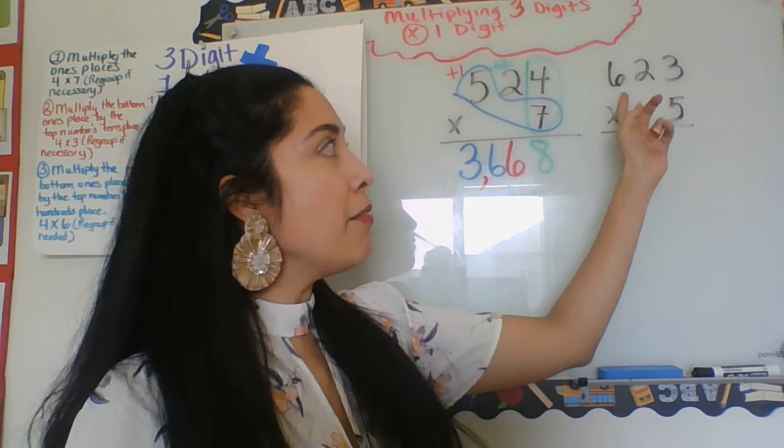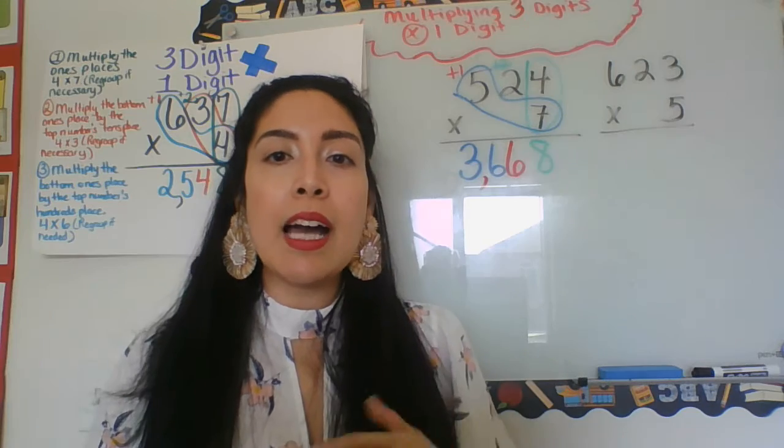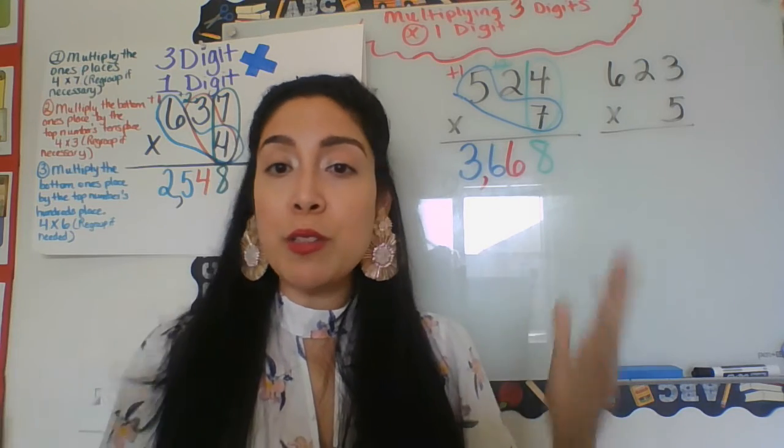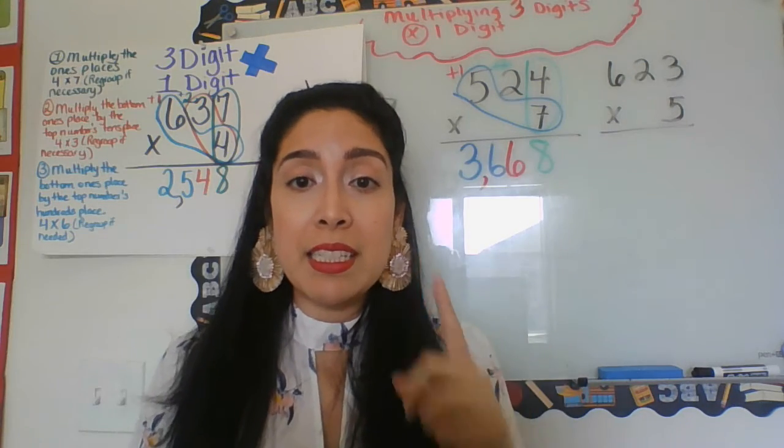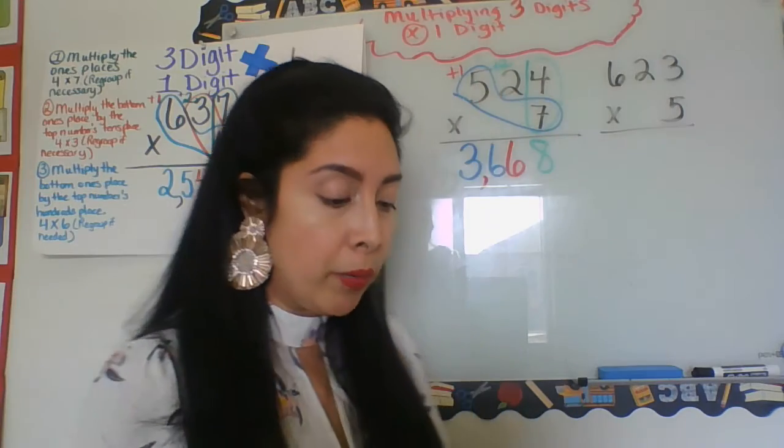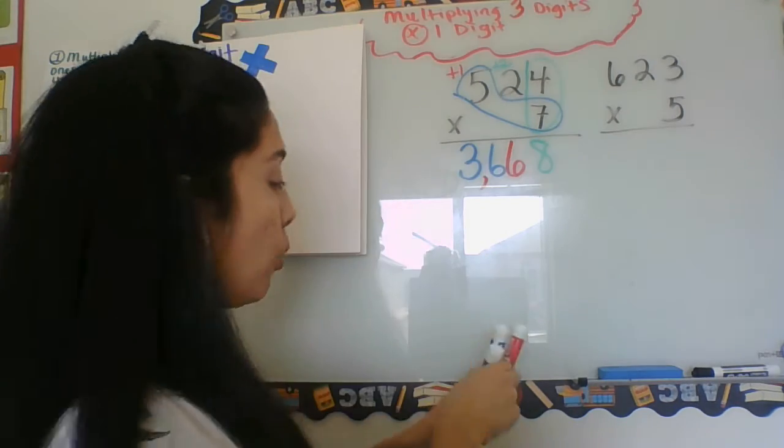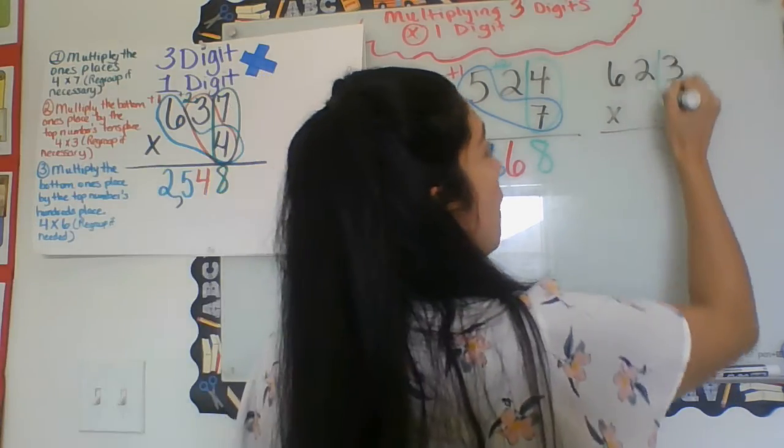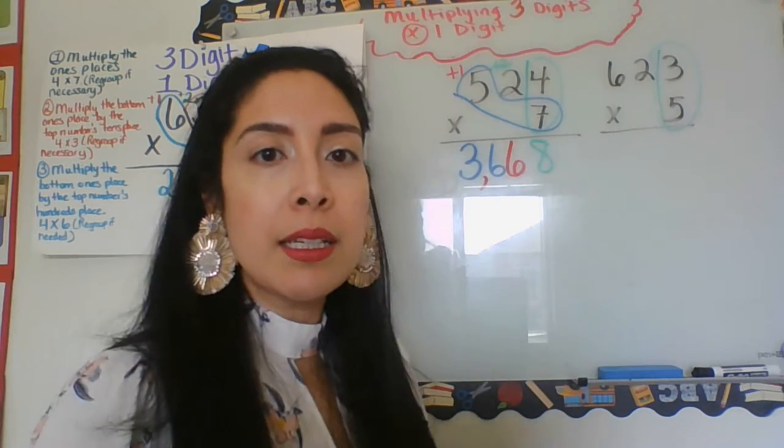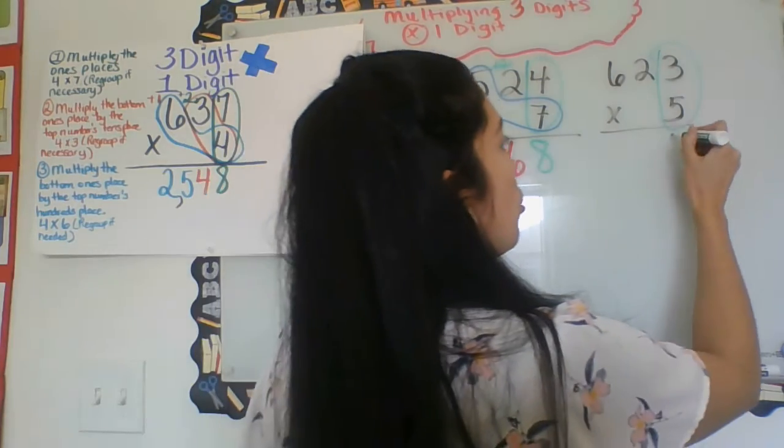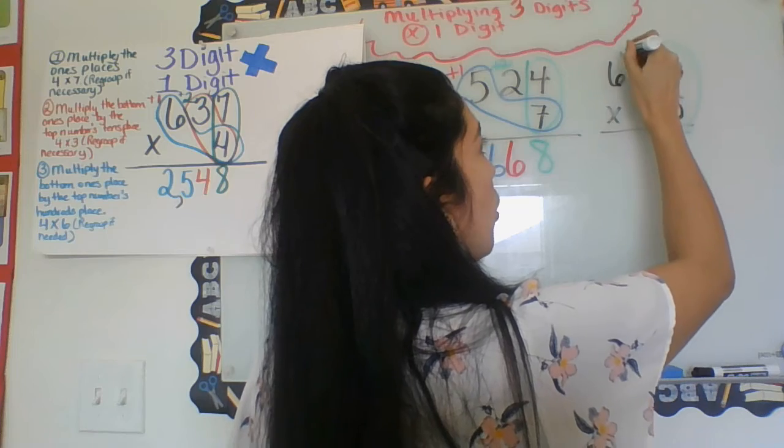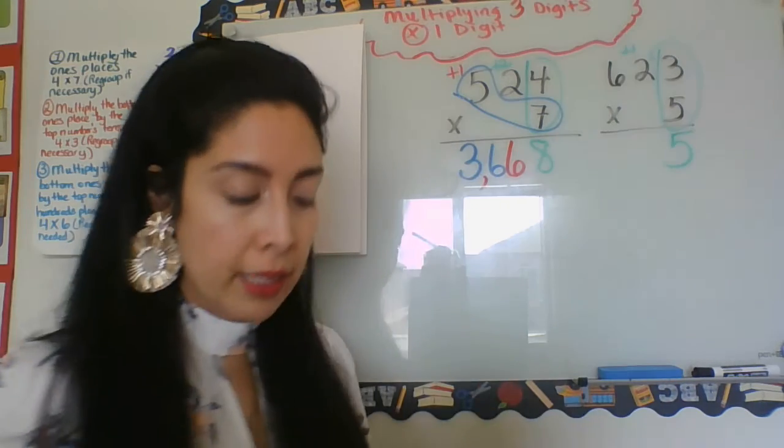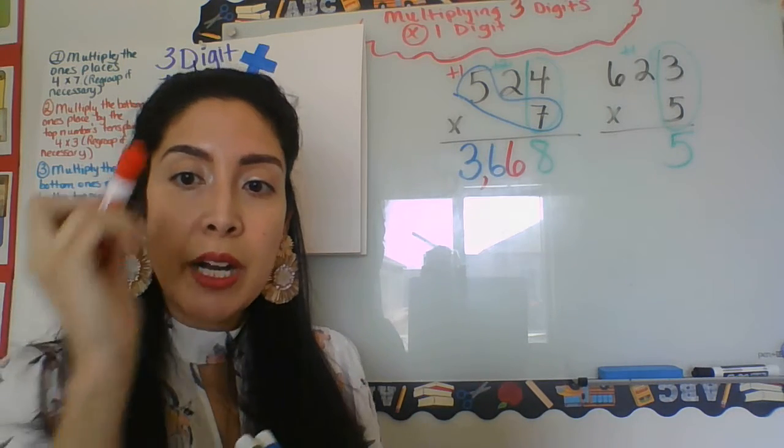Okay, don't forget to put your comma: one, two, three, comma, right, and that is my answer there. Let's try one more. Here we have 623 times five, so we follow the same pattern. Make sure that that one digit gets multiplied by everyone, right? So we're going to go ahead and go once with the one: five times three is 15.